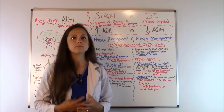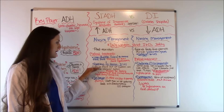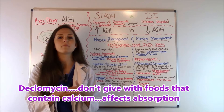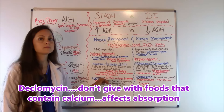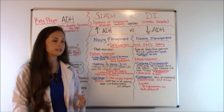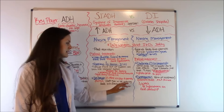Give 3% saline slowly per hospital protocol and usually through a central line, because it's hard on the veins. Another treatment for SIADH is Declomycin — an antibiotic in the tetracycline family. It has properties that inhibit the anti-diuretic hormone, so the patient takes it and the over-secretion of ADH decreases, promoting diuresis. Watch out: do not give Declomycin with calcium-containing foods like milk or antacids, because it affects how the GI system absorbs the drug.